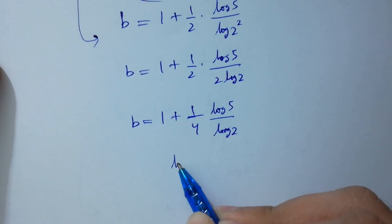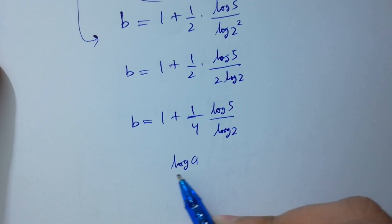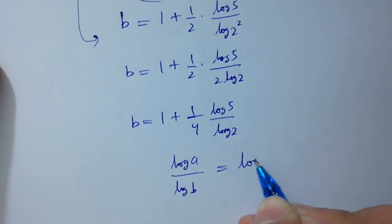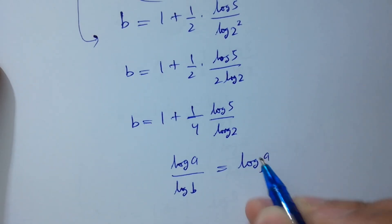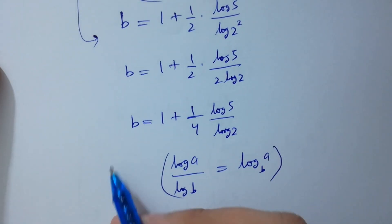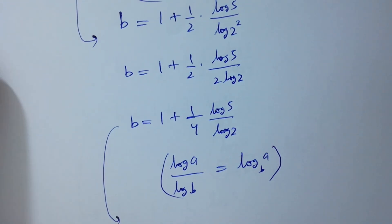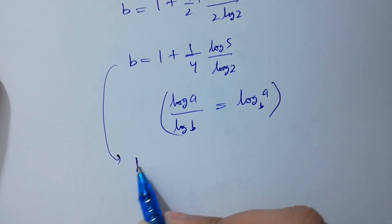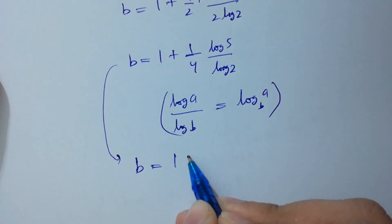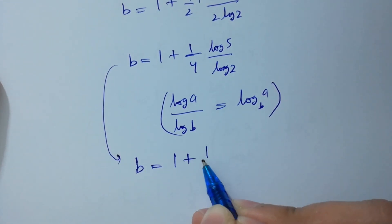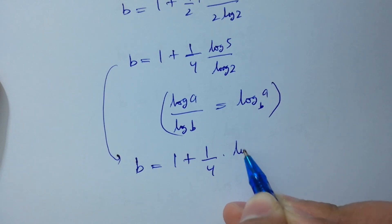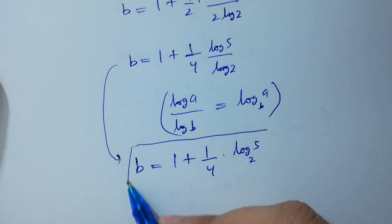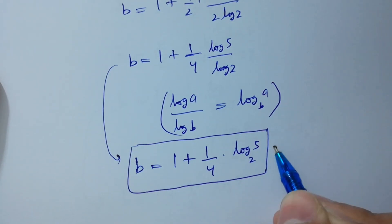Since log 5 over log 4 equals log A to the base B by the change of base rule, B equals 1 plus 1 over 2 times log 5 to the base 4, which is our value of B.